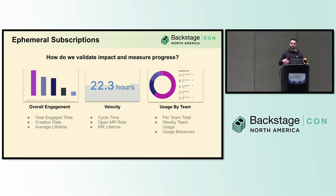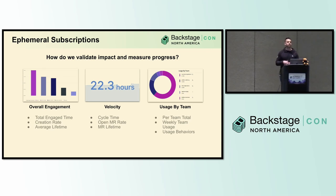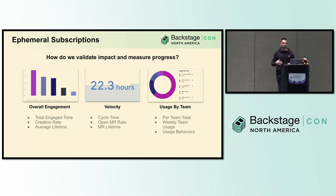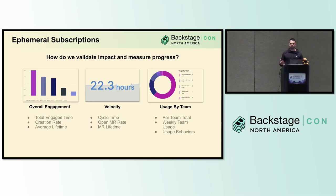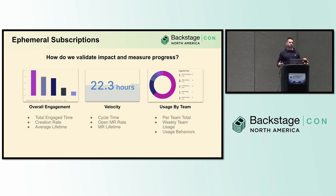We wanted to understand how much time people were spending configuring and managing these environments, because if they're spending a lot of time on management they're not adding value. We also wanted to validate a positive impact on overall velocity, using cycle time as a top-level proxy metric. We also looked at how many merge requests are open per engineer — are they going back and forth because they're waiting on a broken environment? Today we see anywhere from 50 to 60 of these environments in use at any time and around 100 used per week.